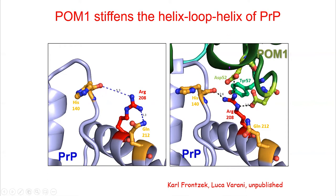When the POM1 antibody comes in, Luca's prediction was that a second conformer becomes much more populated. In this form, a hydrogen bond is built between histidine at position 140 and arginine at position 208. We call this the H-latch — a hydrogen latch that changes the conformation of the prion protein by blocking a loop that is very flexible in the normal state, making it completely rigid.